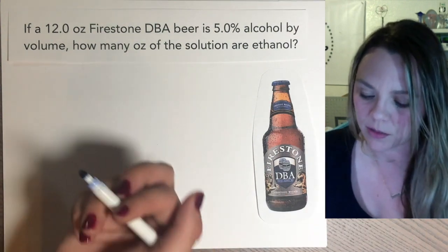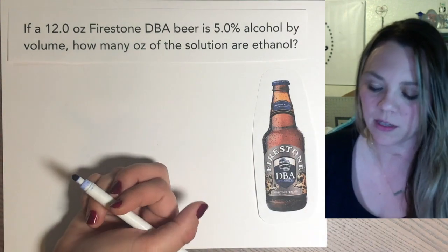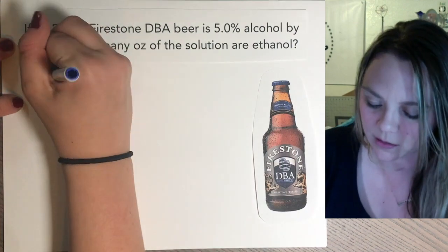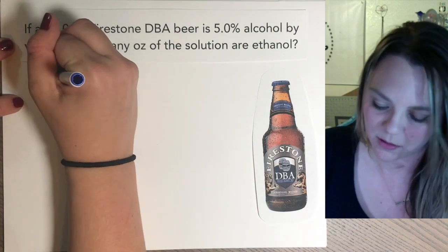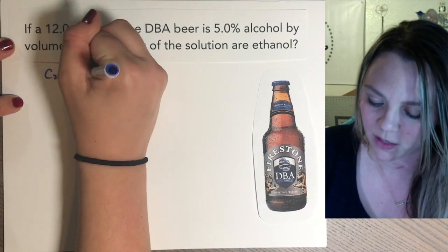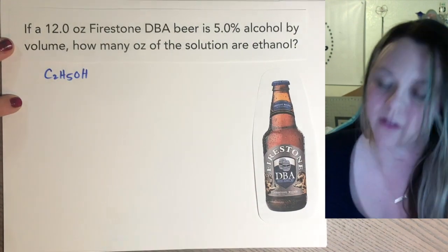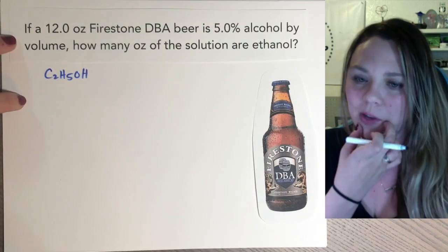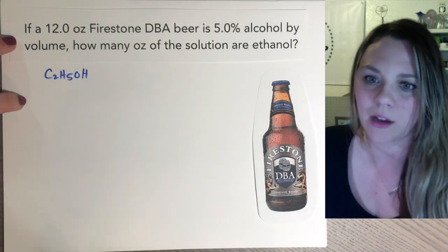Ethanol alcohol is what is in alcoholic beverages. Ethanol is just C2H5OH — that's ethanol, that is the actual alcohol that makes something alcoholic.